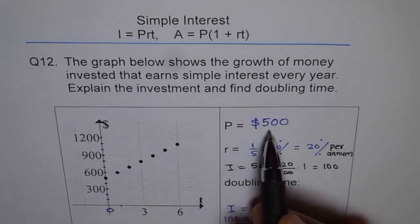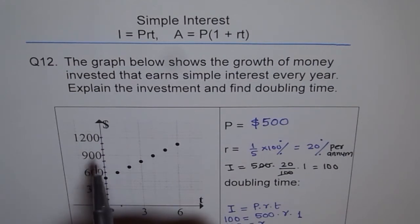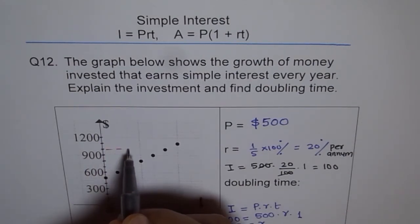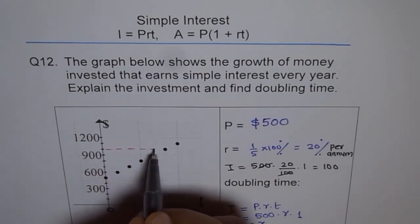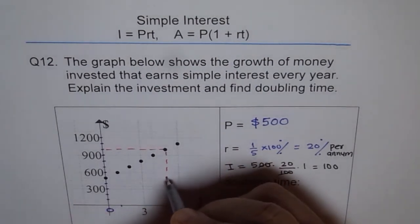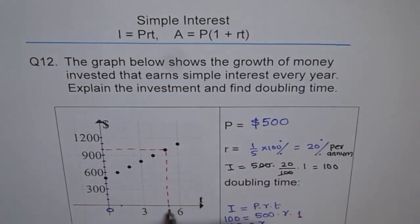The doubling time is the time when the money doubles. We have $500, so doubling means it becomes $1,000. Reading from the graph — going up to $1,000 and reading across — we get five years.